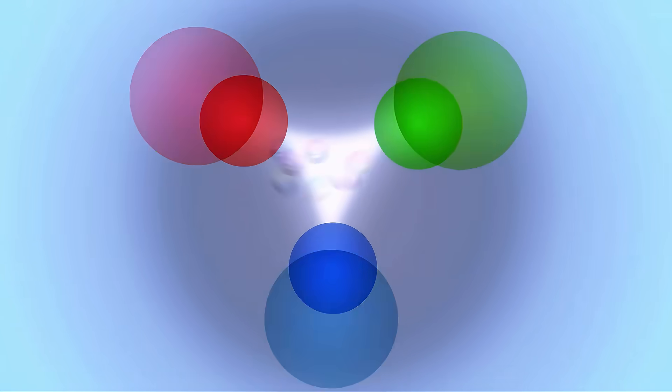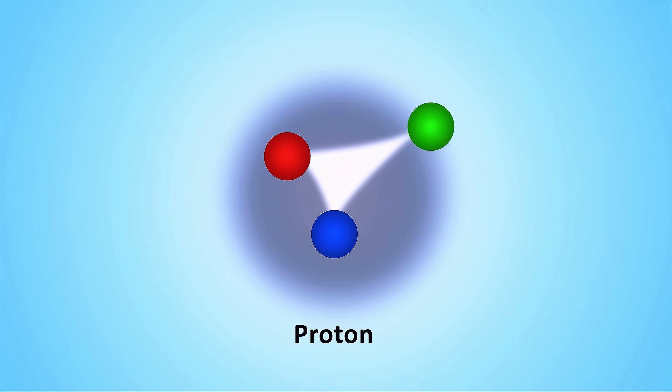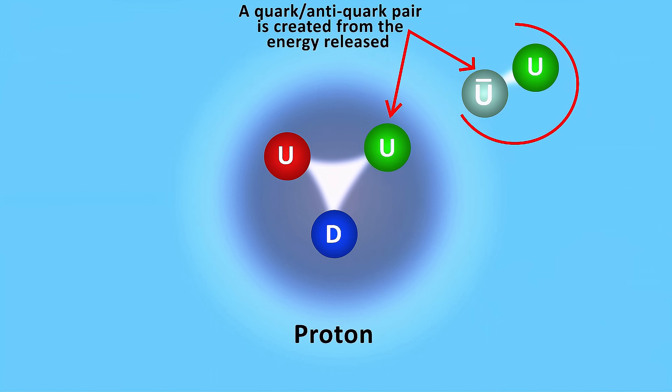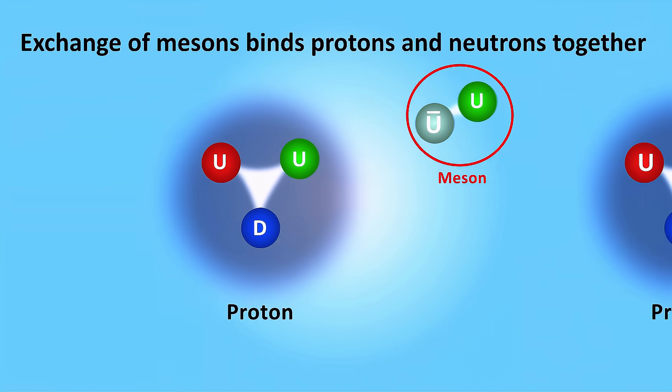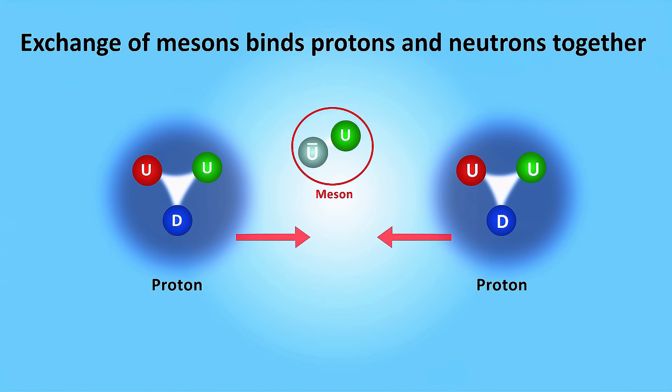And that's not all. If you try and pull quarks apart, the force between them actually grows stronger. Like pulling a spring, which gets harder and harder as you pull it further apart. It brings them back together. In fact, if you apply enough energy to separate quarks, the gluon field snaps, creating new quark-anti-quark pairs, which is a meson. And it is the exchange of these mesons between protons and neutrons that binds them together in the nucleus.